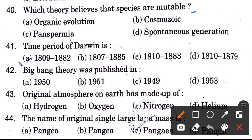Which theory believes that species are mutable? Options are organic evolution, cosmozoic theory, panspermia theory, and the theory of spontaneous generation. The answer is organic evolution.